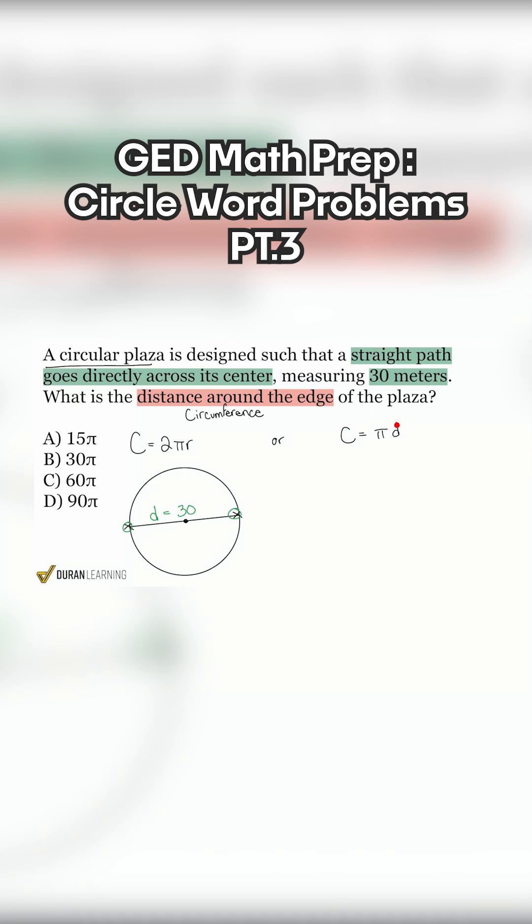And we can say with confidence that we should use this formula here. Why again? Because again, it uses the diameter. This one uses radius. This is the right one. They're both the same formula, but let's use this one. Circumference equals π times 30. And that's just going to be 30π. And that's it.